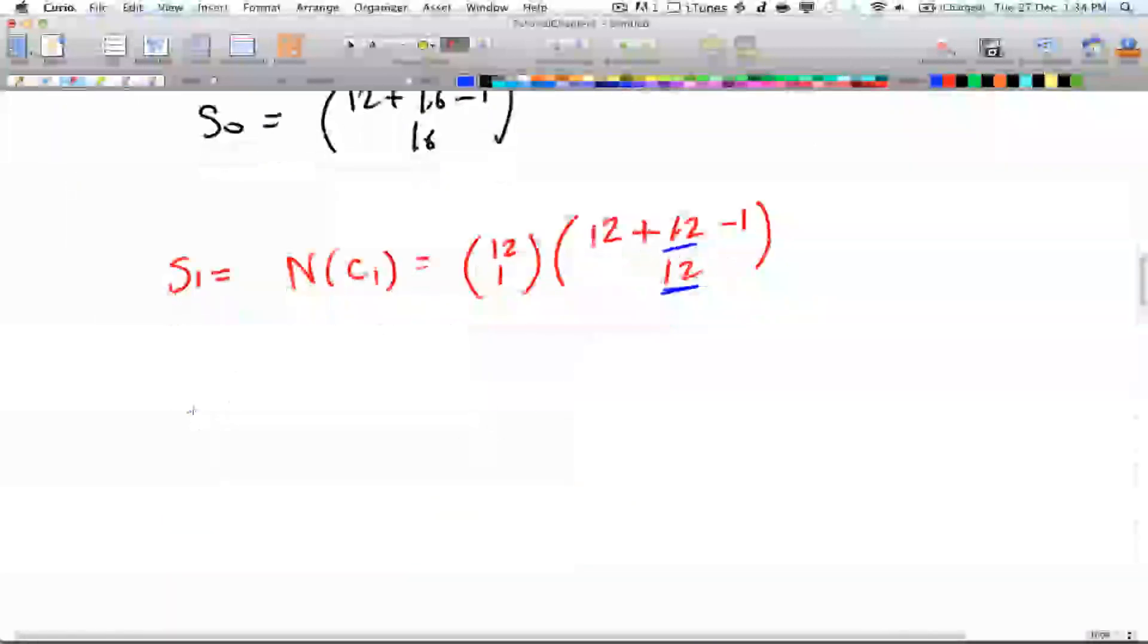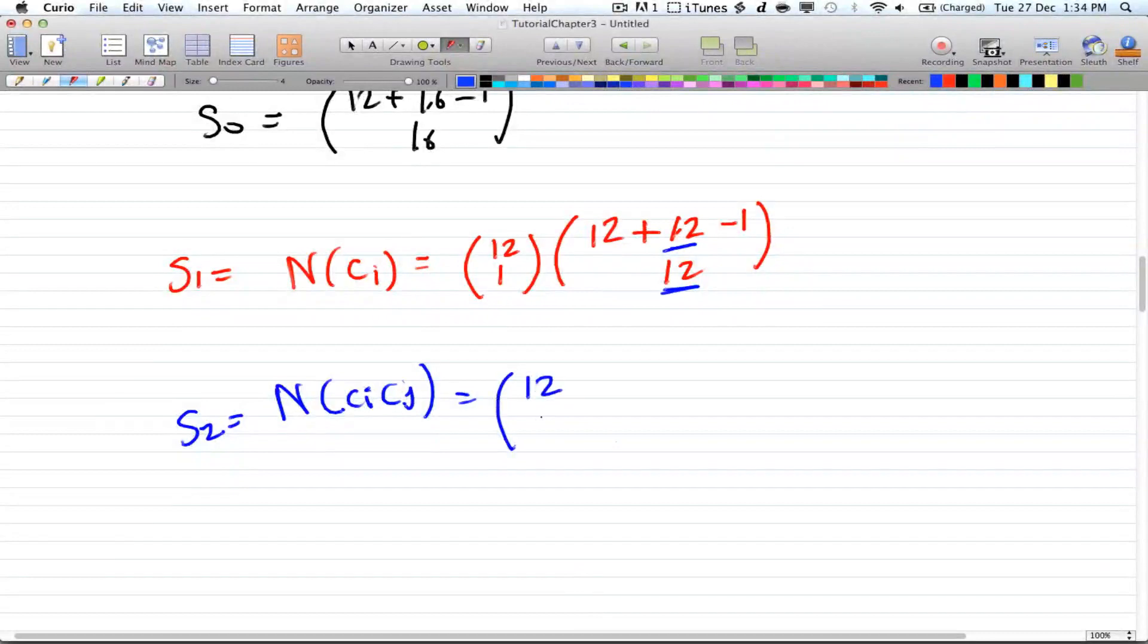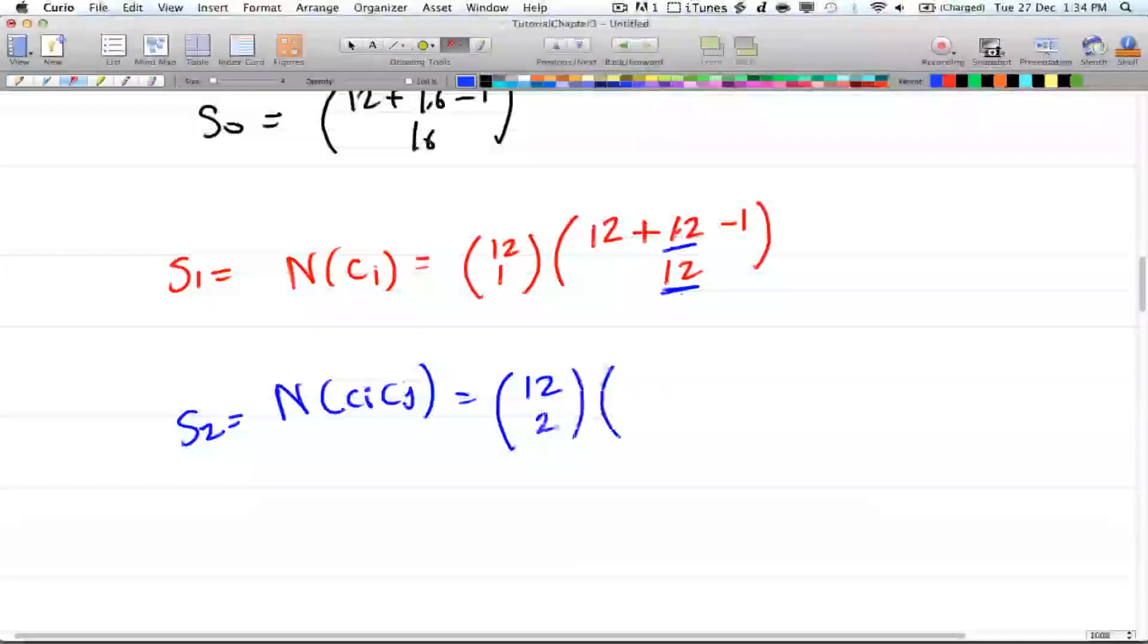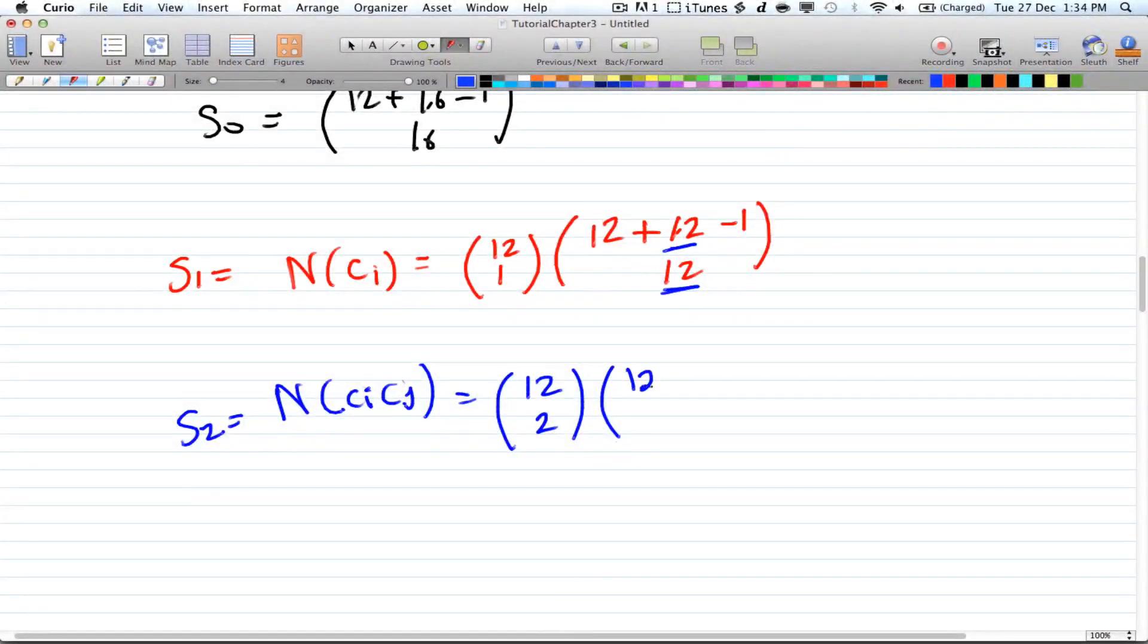Similarly, we have s2 is equal to n ci cj. So now we're choosing two variables, and that is equal to 12 choose 2. And same thing, we're subtracting 4 for each variable we take, so you have 8 left, minus 1, choose 8.